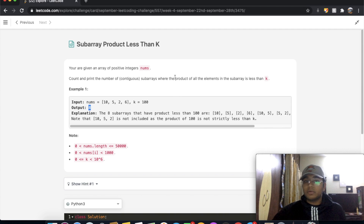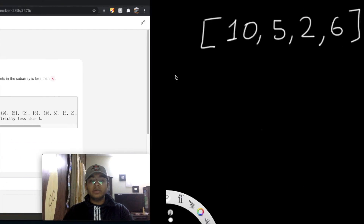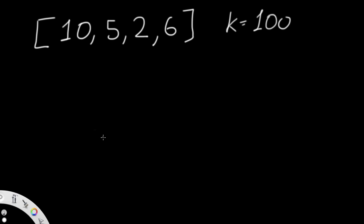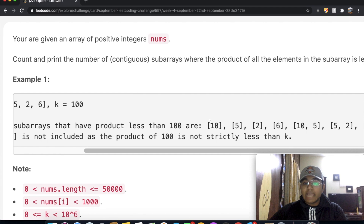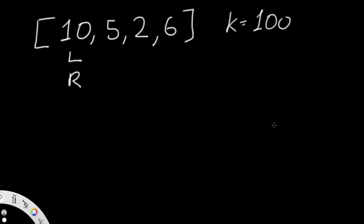I remember solving a very similar question, and we're going to use the same method: the two-pointer method. We'll have a left pointer and a right pointer, both starting at index zero — the first element. The reason both pointers start at the same position is that an individual number by itself counts as a valid subarray. So 10, 5, 2, and 6 are all individually valid, which is why left and right both start at the same position.